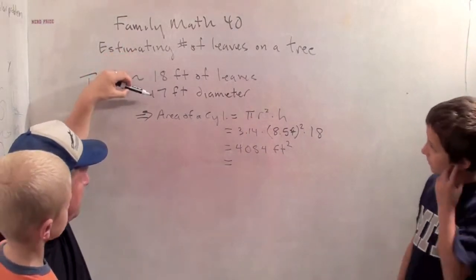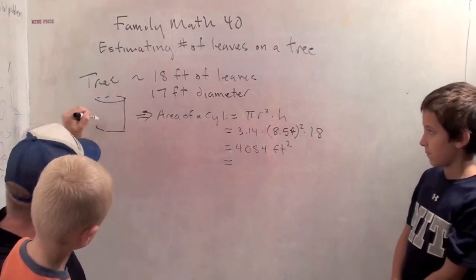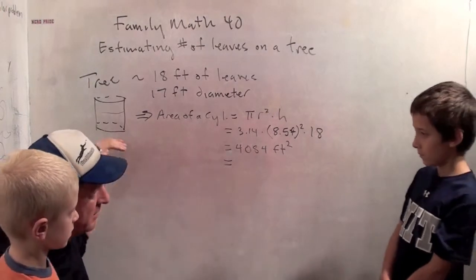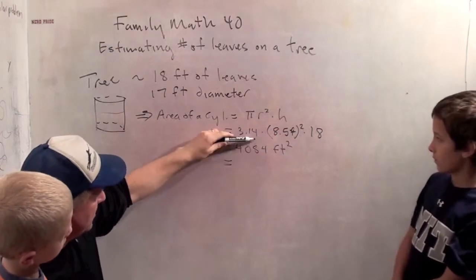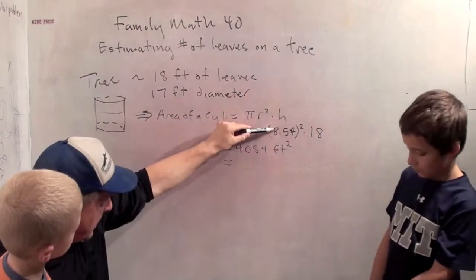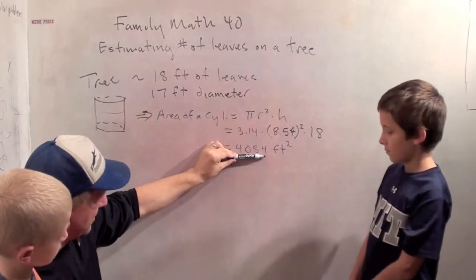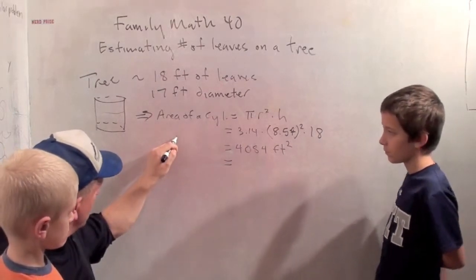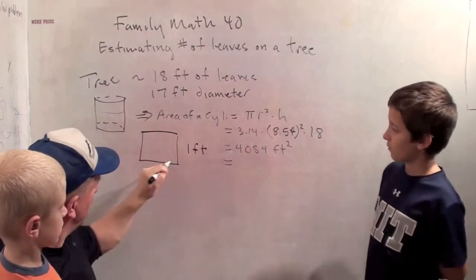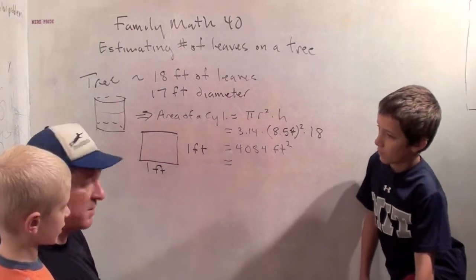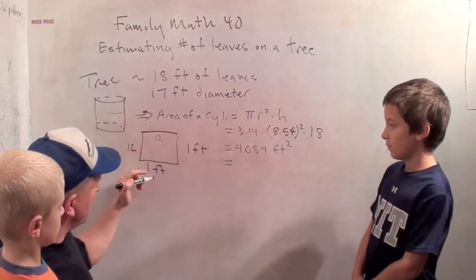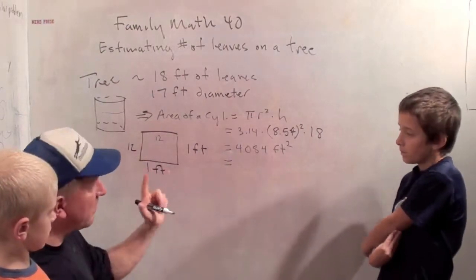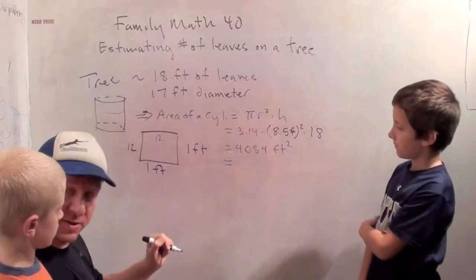Now we have to talk about a couple of things. The tree had 18 feet of leaves and a 17 foot diameter. We're just pretending that the tree is this big cylinder. It turns out the formula for the area of a cylinder, just the outside area, not the volume, but the area on the outside is pi times the radius squared times the height, which is pi is about 3.14, 17 feet diameter meant eight and a half foot radius and the height was 18 and so that's about 4084 square feet. But we have to go from square feet to square inches. So if I have a square that's one foot by one foot, how many inches is it on each side? 12 inches. So one square foot, one times one is one, is how many square inches? 144. So there's 12 inches in a foot and 144 square inches in a square foot.